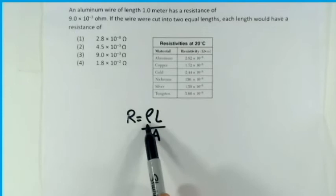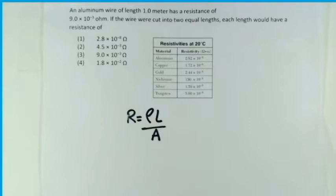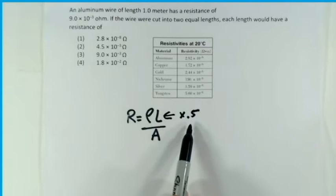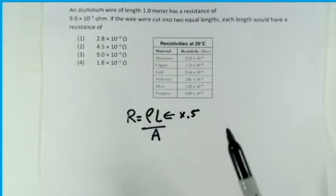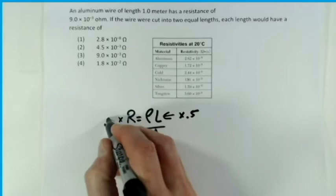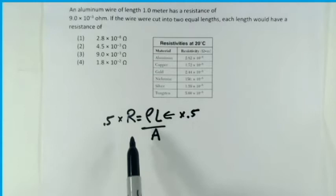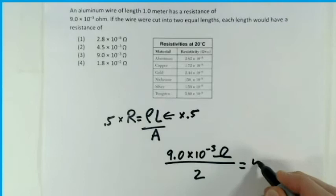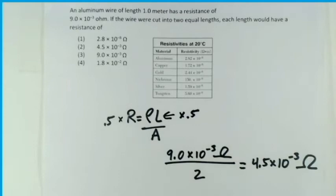The wire is aluminum, so the resistivity ρ does not change. What we are changing is the length — we're cutting it in half, going from one meter to 0.5 meters, effectively multiplying the top by 0.5. Since we have an equal sign, whatever we do to the right side we must do to the left. So we multiply both sides by 0.5 — we cut the resistance in half. We had 9.0 × 10⁻³ ohms, cut in half gives us 4.5 × 10⁻³ ohms.